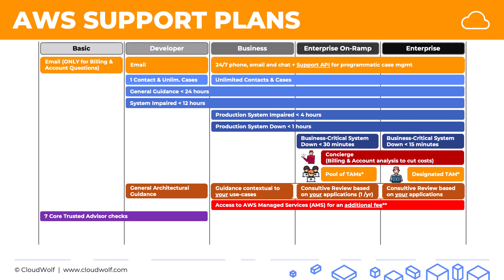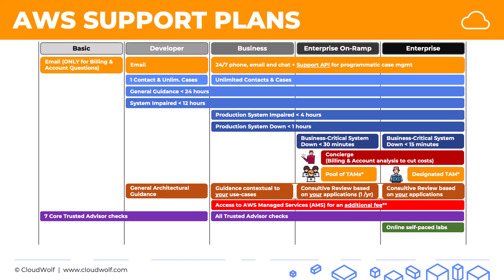Regarding Trusted Advisor: you get seven core trusted advisor checks with the basic and developer plans. In the business, enterprise on ramp, and enterprise plans you get all trusted advisor checks — another important exam point. In the enterprise plan, you also get online self-paced labs for learning.